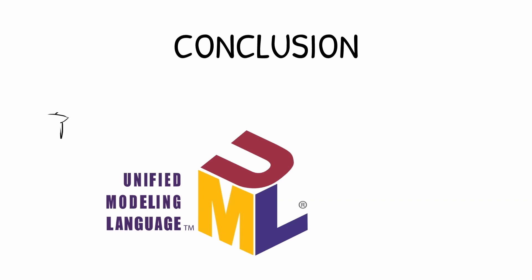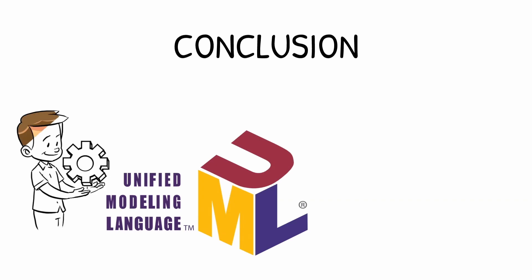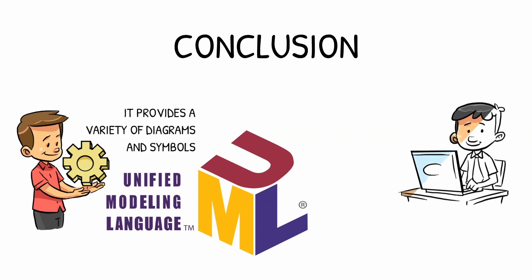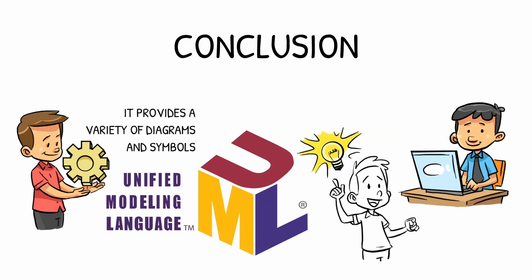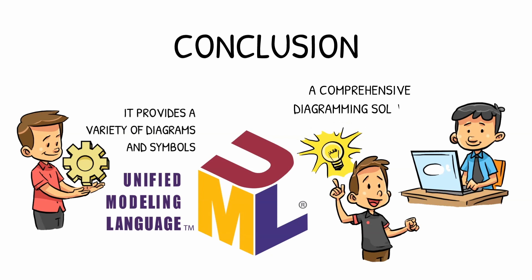In conclusion, UML is a powerful diagramming tool that can assist you in visualizing, documenting, and communicating your designs. It provides a variety of diagrams and symbols to assist you in modeling your system. It is a well-established standard that is supported by many different tools and languages, making it a popular choice for software development projects. Its versatility means it can be used for everything from requirements gathering to testing. So, if you're looking for a comprehensive diagramming solution, UML is a good place to start.